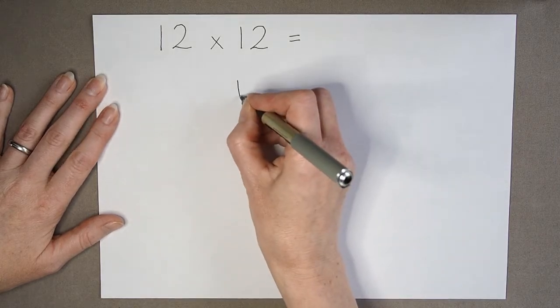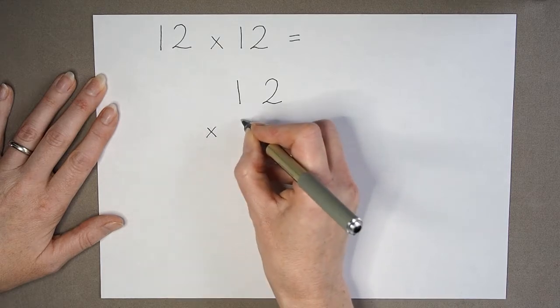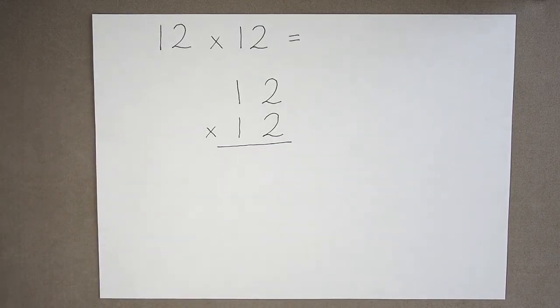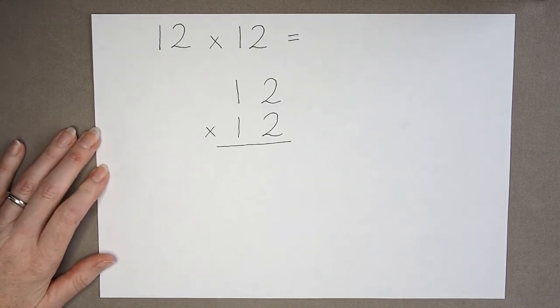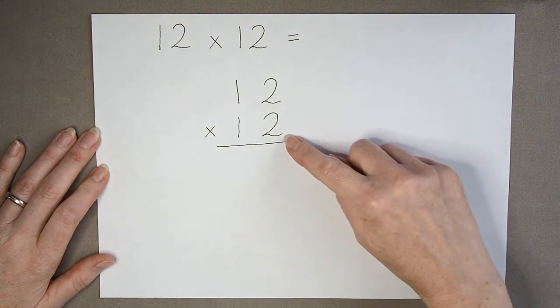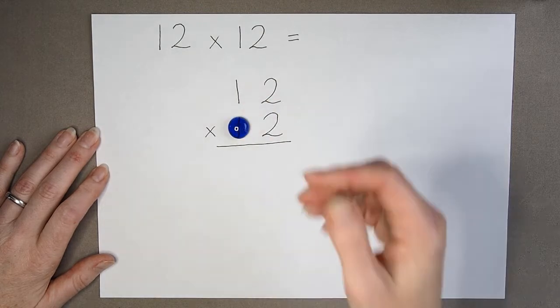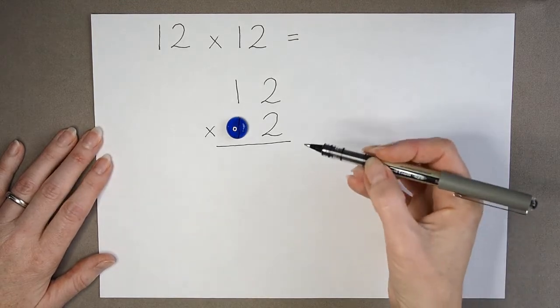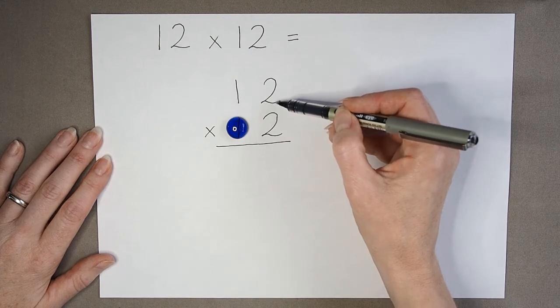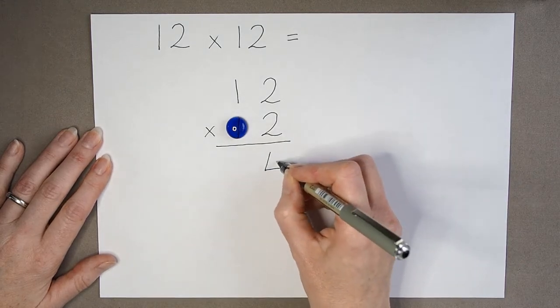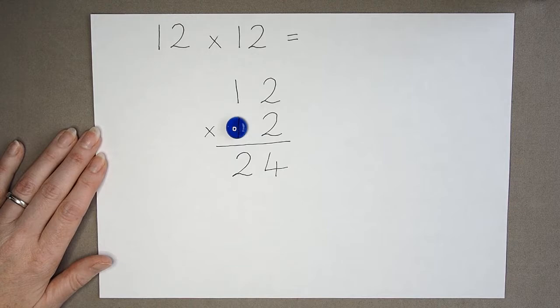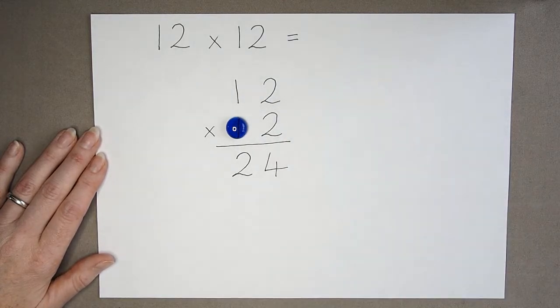I'm going to write out my calculation, 12 multiplied by 12. So to start, it's just like we would do with column multiplication when we're multiplying by one digit. We would start with our units. I'm just going to use a counter to cover up this tens digit because for the moment we don't need to worry about that digit. We can use our method to say 2 multiplied by 2 is 4 and 2 multiplied by 1 is 2.